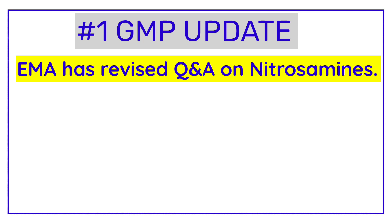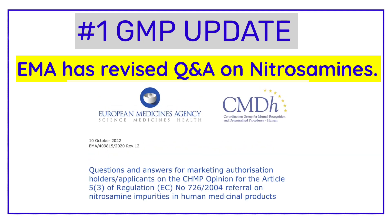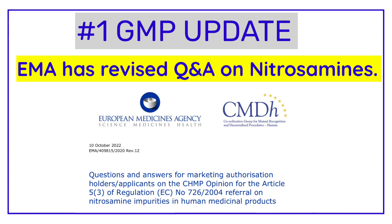GMP Update Number One is for pharma professionals dealing with nitrosamine impurities. EMA, the European Medicines Agency, publishes recent developments related to nitrosamine impurities in the form of a question and answer document from time to time. In the month of October, EMA updated this Q&A document. On 12th October 2022, EMA published this updated question and answer document on its website.